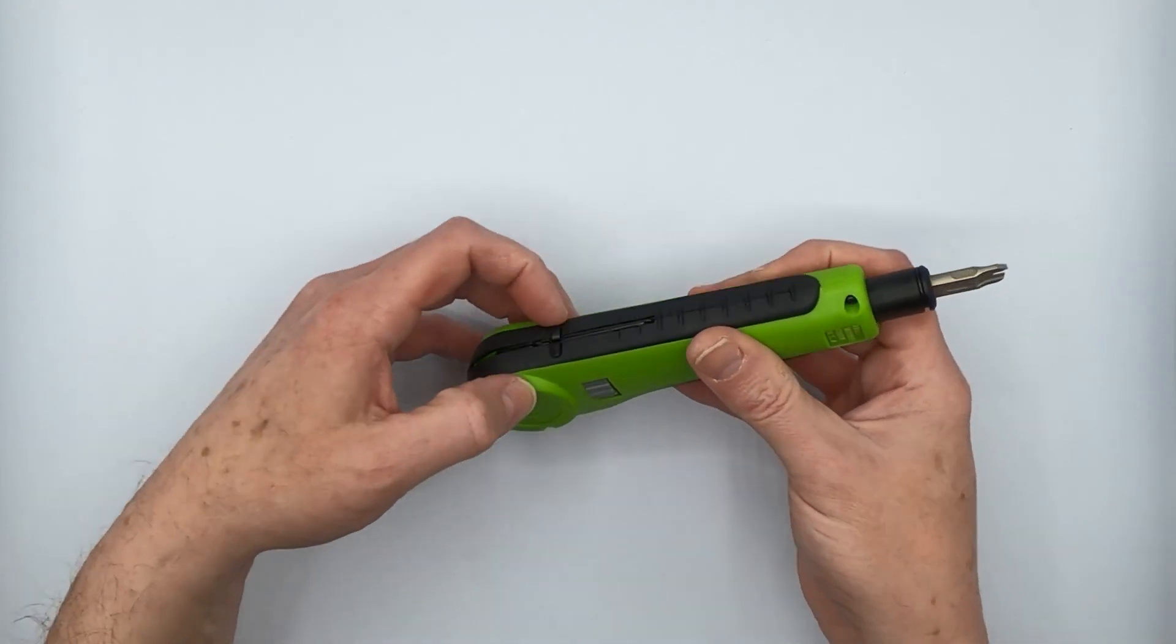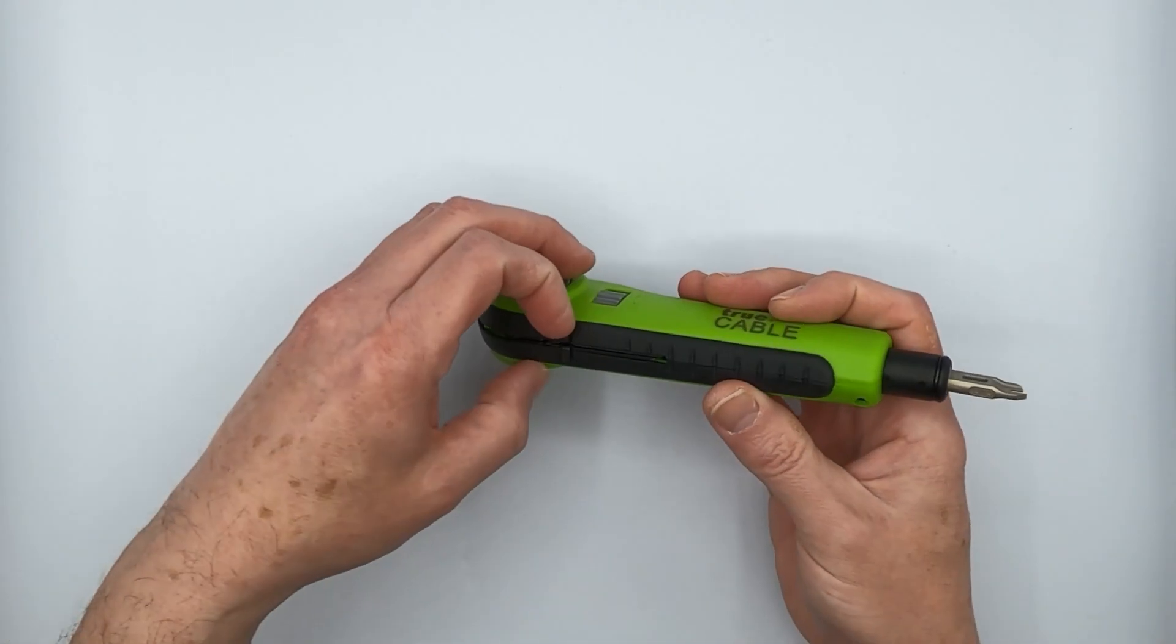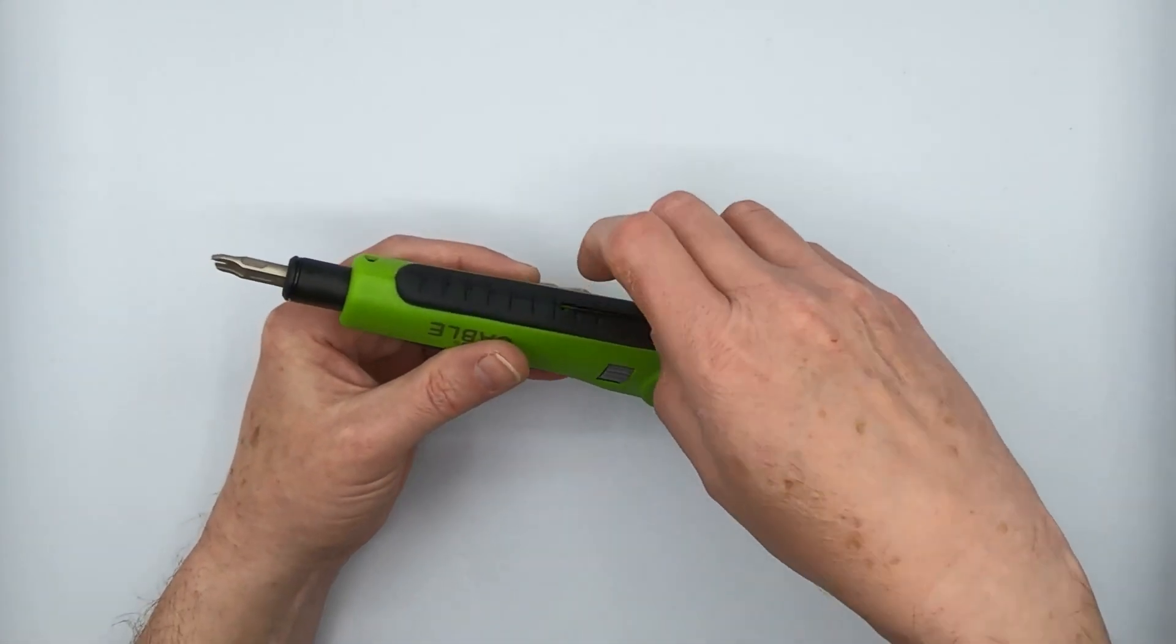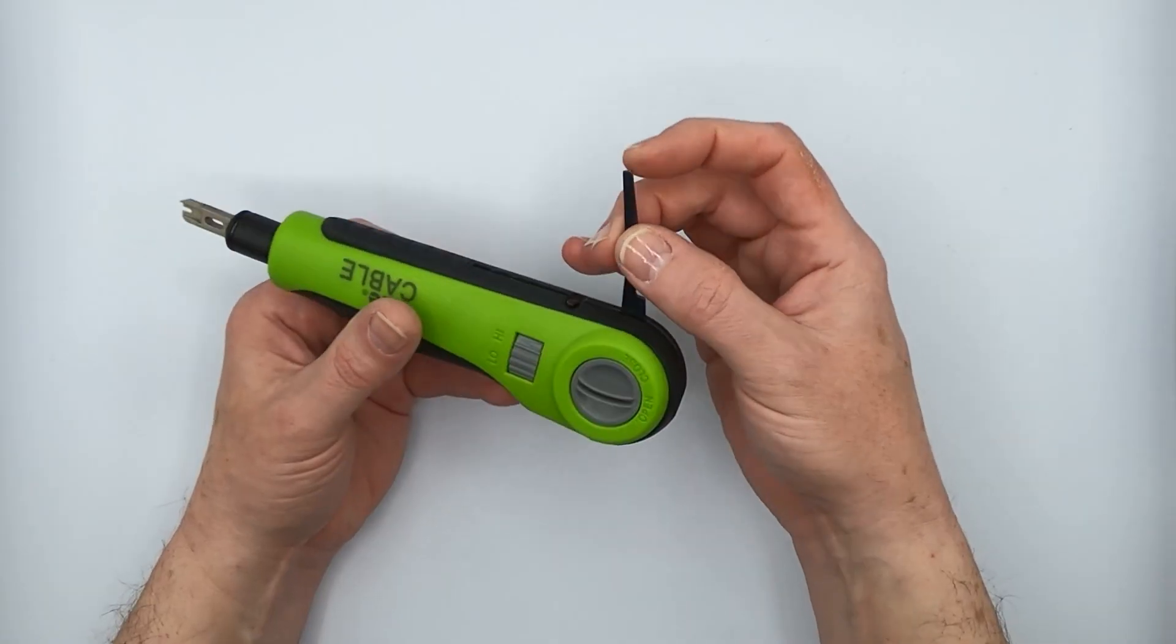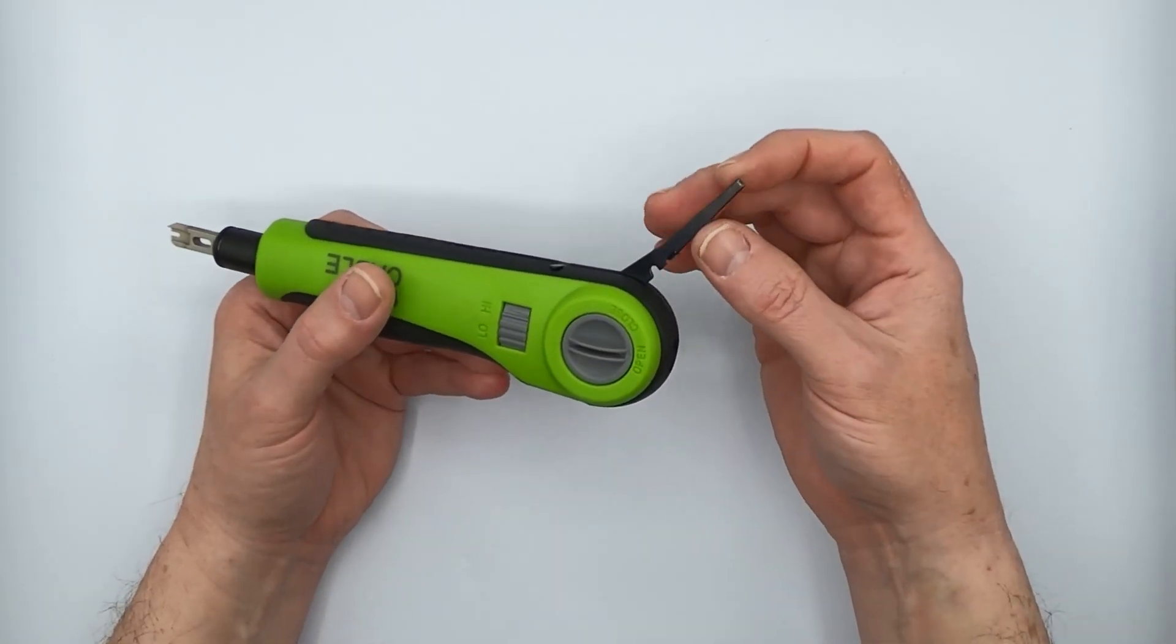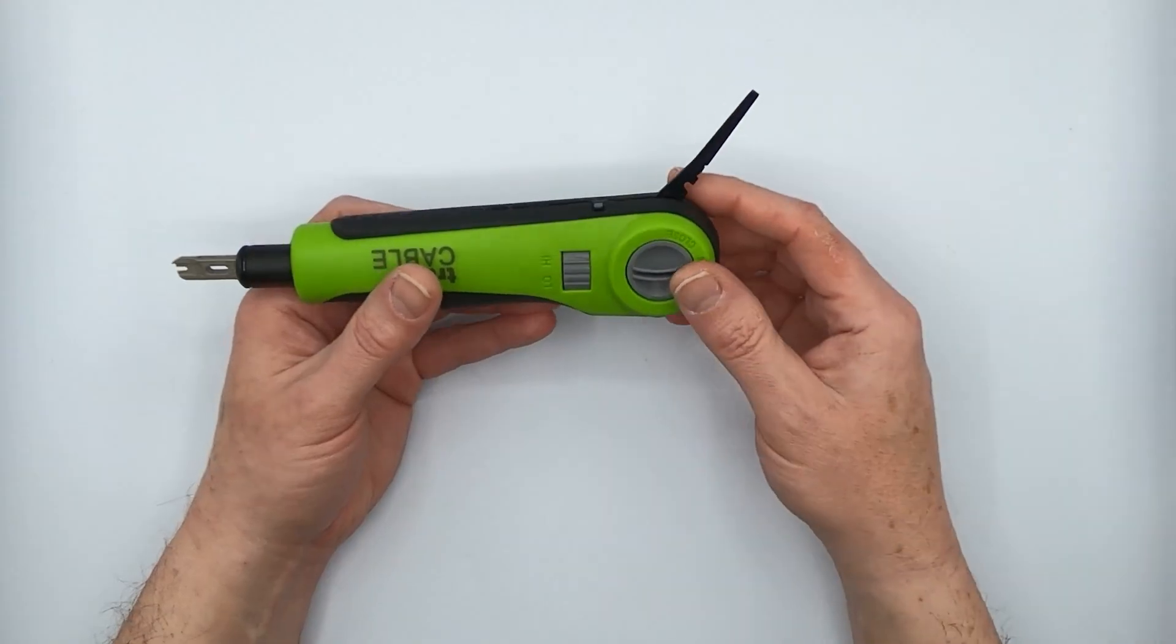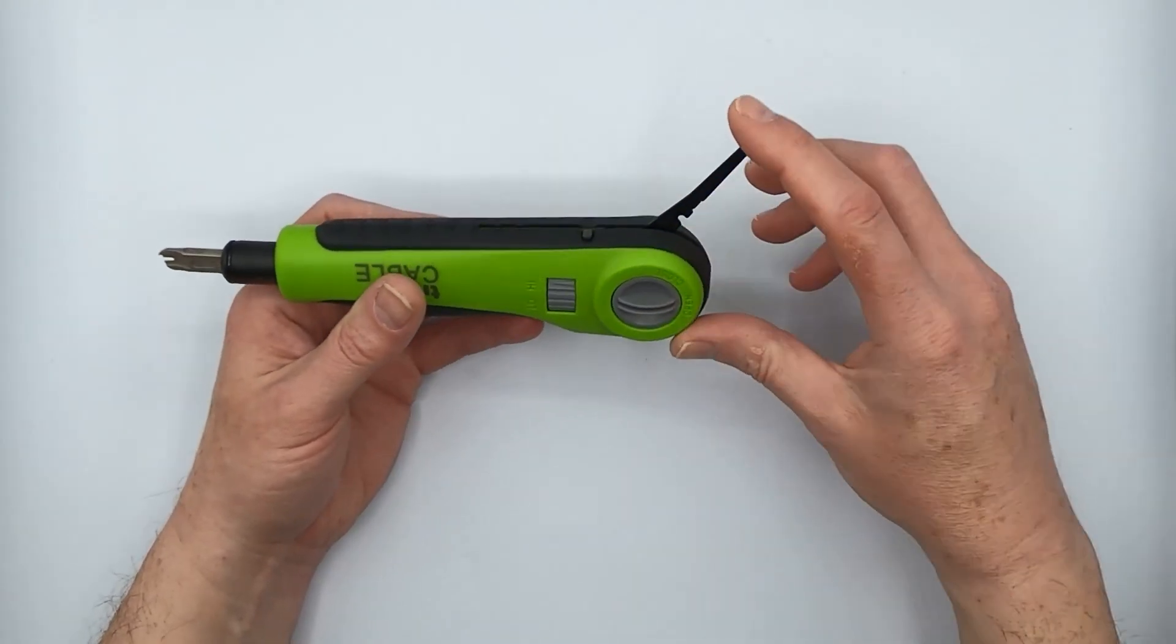And there's a couple of additional items on this tool that will make your life a lot easier. One is it's got a spudger, which can serve as a small screwdriver. Also maybe as a little pry bar for whatever it is you might want to pry on.